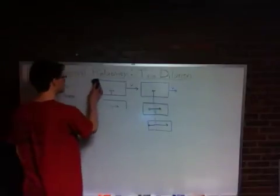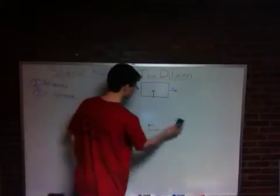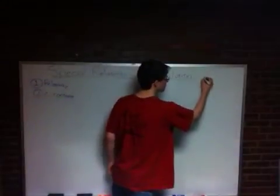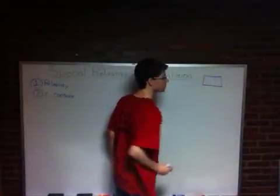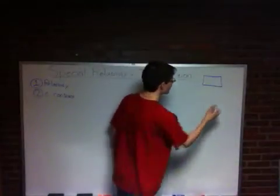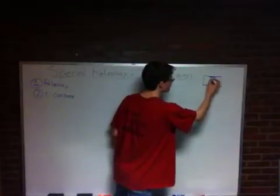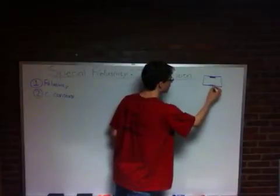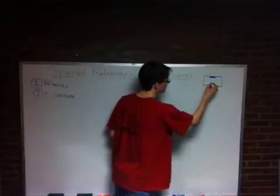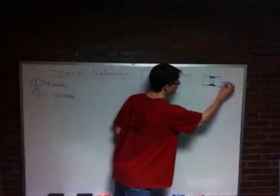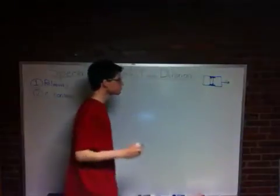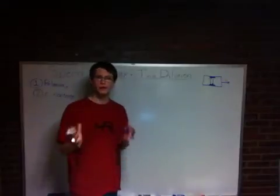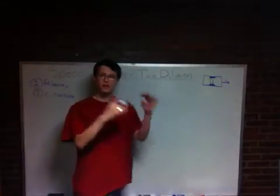We're going to draw a new train. This train is going to be a little bit different — we're going to have a rectangle with a mirror on the top and a mirror on the bottom, and we're going to bounce a photon from the bottom up to the top and then back down to the bottom. This train will be moving at a velocity v to the right. We're going to look at it from the frame of reference of the person inside the train and outside the train.